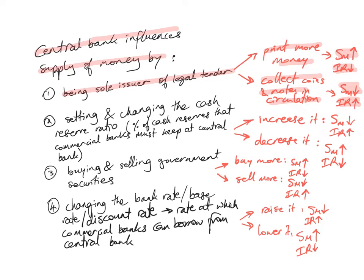Another mechanism is to set and change the cash reserve ratio, which is the percentage of cash reserves that commercial banks must keep at the central bank. Commercial banks take money from consumers who want to save or deposit, and the central bank forces them to keep a percentage of these reserves. If the central bank increases the cash reserve ratio, the supply of money decreases and the interest rate rises. If it decreases the ratio, commercial banks keep less money at the central bank, the supply of money increases, and the interest rate falls.